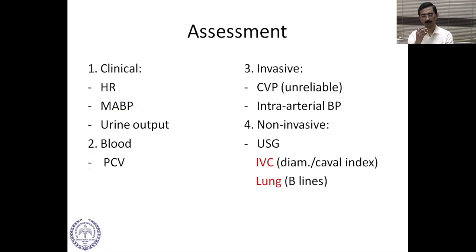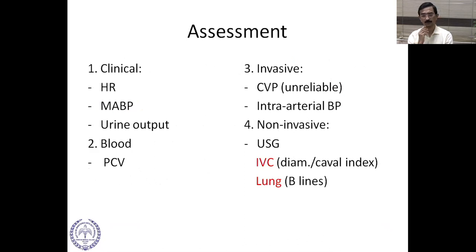When assessing fluid status, we consider clinical parameters such as heart rate, blood pressure, urine output, and blood tests like PCV. Invasive options include CVP, which is unreliable, and intra-arterial blood pressure monitoring. Non-invasive measures using ultrasound to look at IVC diameter, collapsibility index, and lung B lines can also be used.